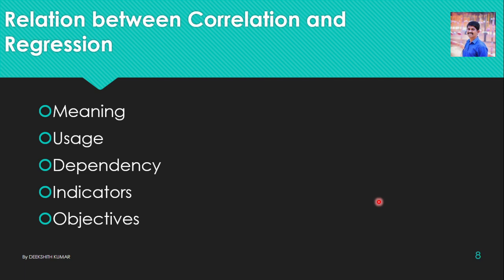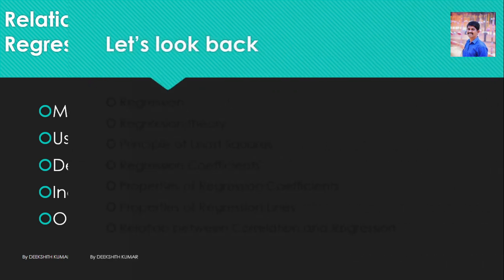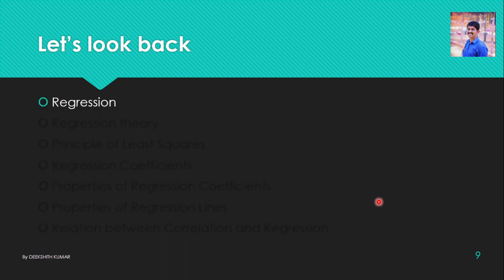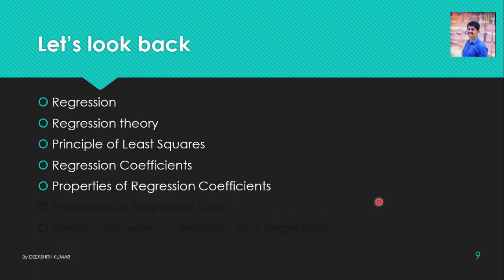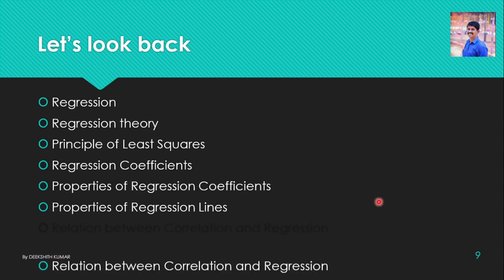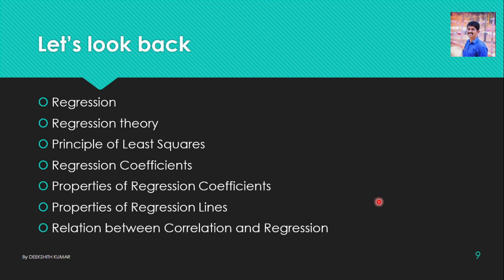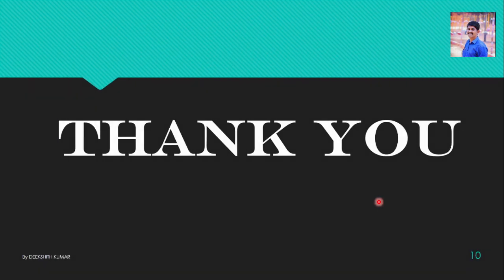In this video we have studied the literal meaning of regression and what regression is. We then covered regression theory, the principle of least squares, regression coefficients and their properties, properties of regression lines, and finally the relationship between correlation and regression. In the next video we will study problems related to this topic. Thank you.